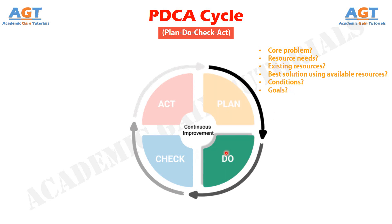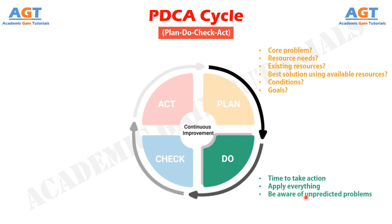Step number two: Do. After you have agreed on the plan, it is time to take action. At this stage, you will apply everything that has been considered during the previous stage. Be aware that unpredicted problems may occur at this phase. This is why, in a perfect situation, you may first try to incorporate your plan on a small scale and in a controlled environment. Standardization is something that will definitely help your team apply the plan smoothly. Make sure that everybody knows their roles and responsibilities.